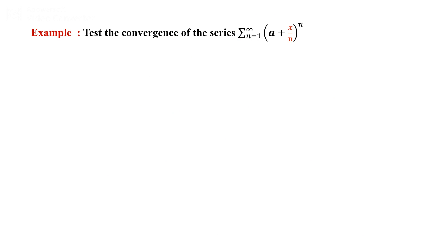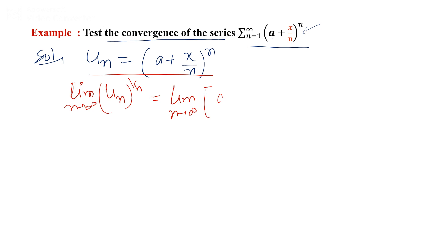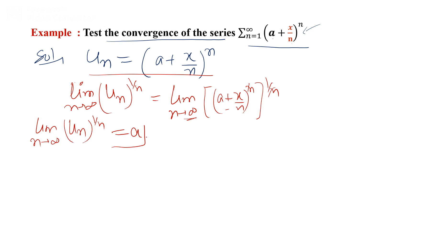Another example: Test the convergence of the series with general term ((a + x)/n)^n. The nth term is u_n = ((a + x)/n)^n. We apply the Cauchy root test and compute limit as n→∞ of u_n^(1/n): we get limit as n→∞ of (a + x)/n, since the nth power and the 1/n power cancel. Applying the limit gives us a (assuming a + x is constant and n → ∞ makes x/n → 0, so this approaches a).